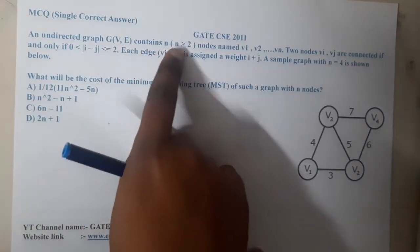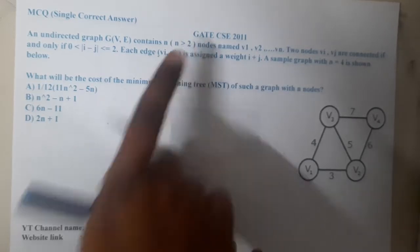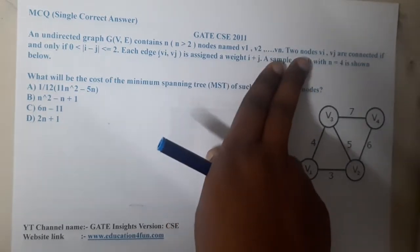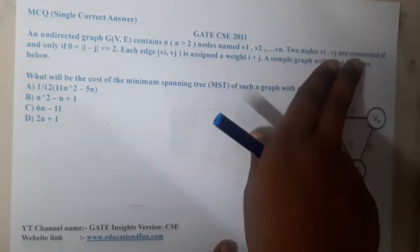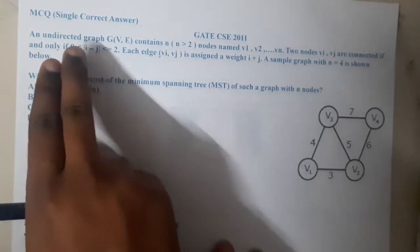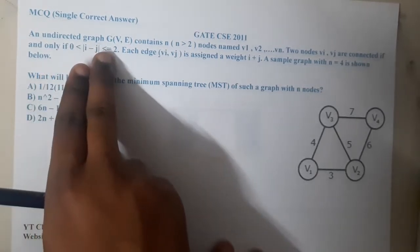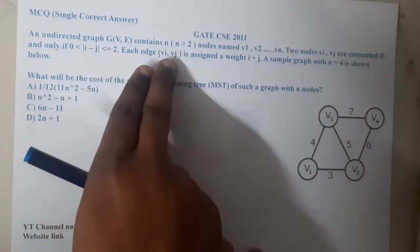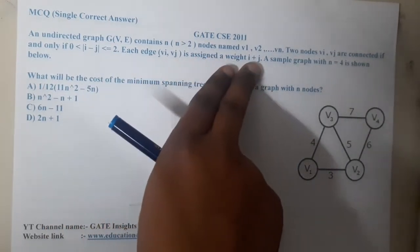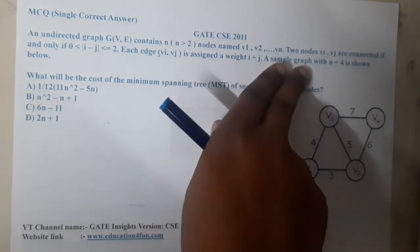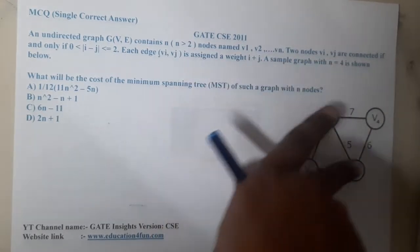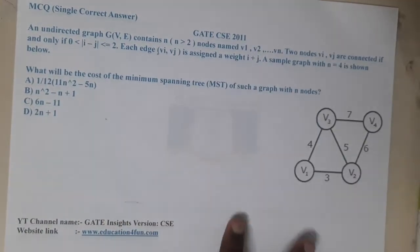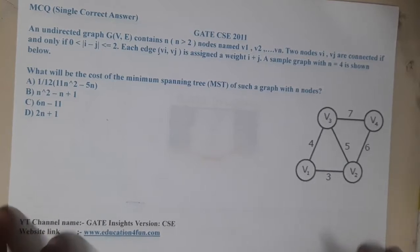The question is: an undirected graph G of V comma E contains n greater than 2 nodes, named from v1 to vn. Two nodes vi and vj are connected if the distance between them is greater than 0 or less than or equal to 2. Each edge (vi, vj) is assigned a weight i plus j. A small graph with n equal to 4 is shown below. What will be the cost of the minimum spanning tree for the given n nodes?